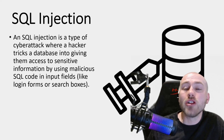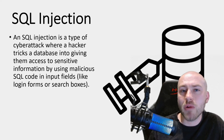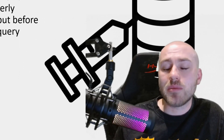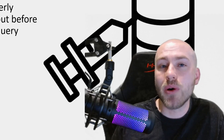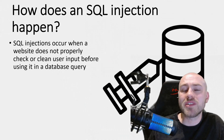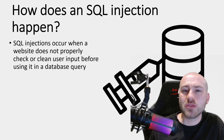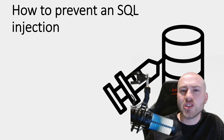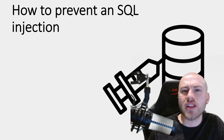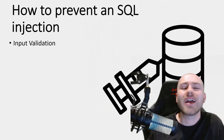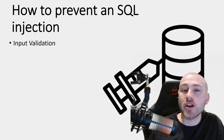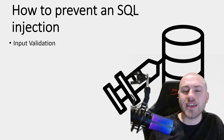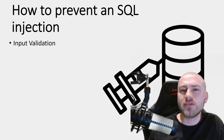SQL injections often occur through places where the user types in information, such as a login form or search box on a website — this is called user input. If the website has good web design, it will check and clean what the user inputs before it's processed. The most common prevention method is input validation: only correct, expected information is allowed through.